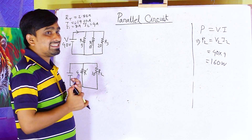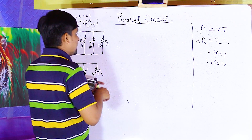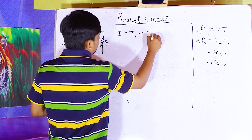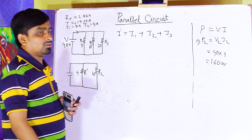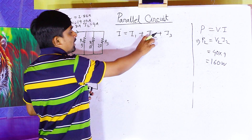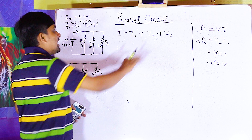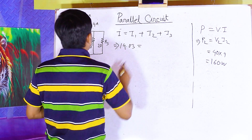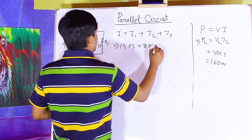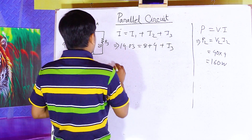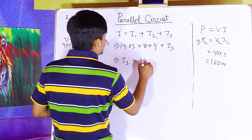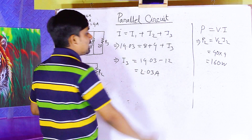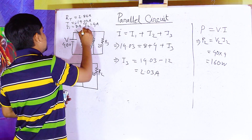Now, for KCL applied, the equation is: supply current, or total current I, equals I1 plus I2 plus I3. Since I, I1, and I2 values are known, we can find I3. I3 equals 14.03 minus 12, equals 2.03 ampere. So the current across R3 is 2.03 ampere.